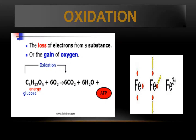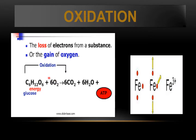Oxidation is the loss of electron from a substance, or gain of oxygen. That is oxidation. For example, glucose is oxidized to carbon dioxide — that is oxidation. Here glucose, in the form of energy with the help of oxygen, is converted into carbon dioxide. There is a gain of six oxygen molecules to this glucose to produce carbon dioxide, or there is a loss of electron.